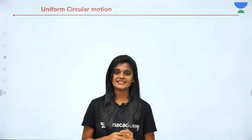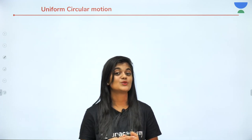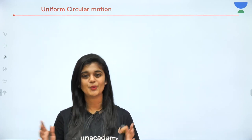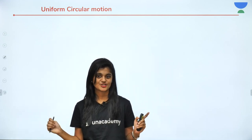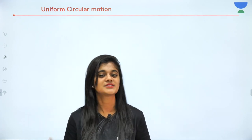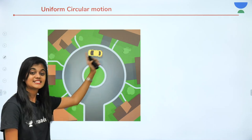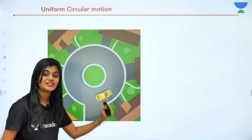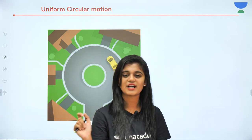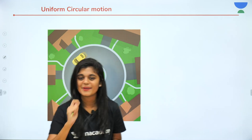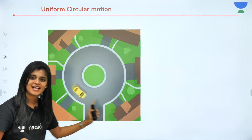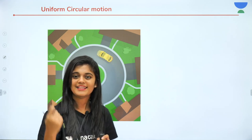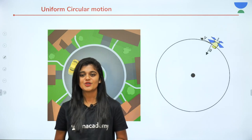So till the previous lecture we were studying kinematics — that is 1D kinematics, motion in one dimension. Today we start motion in 2D. So first: circular motion. Uniform circular motion — what does it mean? If you see a car moving in a circular track, the car is moving with circular motion. If the speed is constant throughout that circular motion, then we say it is uniform circular motion.